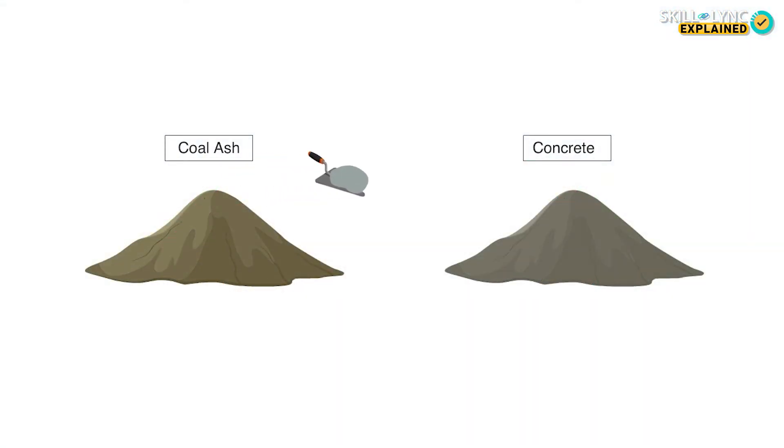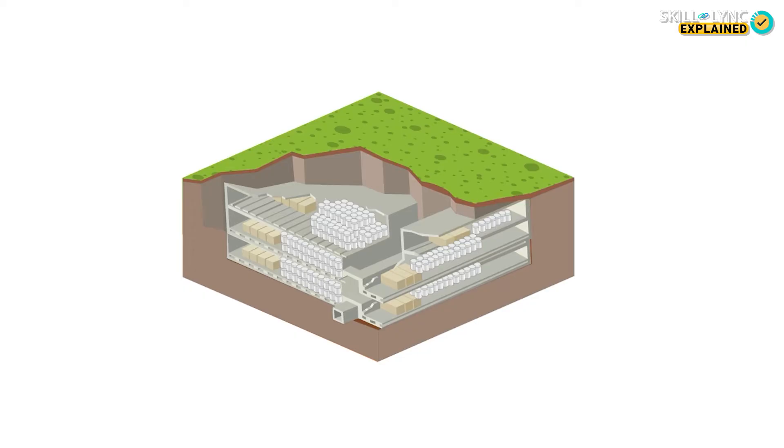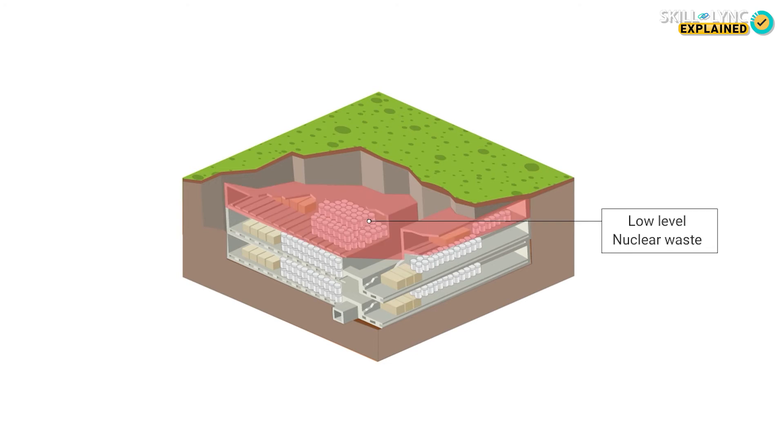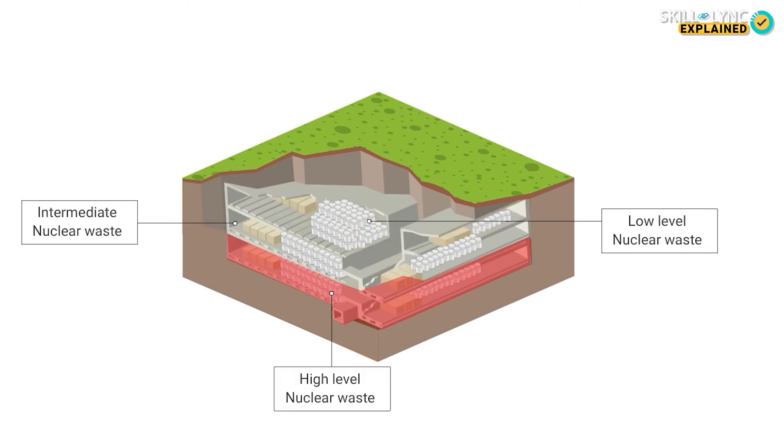Coal ash can also be mixed with concrete, cutting out cement from the process. While nuclear sources of fuel are a much cleaner alternative to coal because they don't release carbon dioxide directly into the atmosphere, they still have their challenges in terms of waste disposal because of the radioactive nature of this waste. Depending on the levels of radioactivity, nuclear waste is usually divided as low, intermediate, and high level waste.